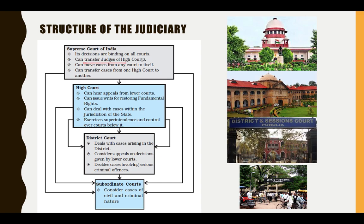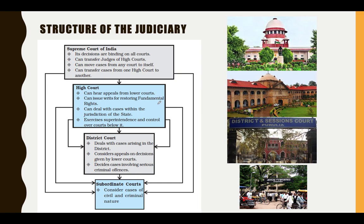The Supreme Court can transfer judges of the High Court. It can move cases from any court to itself. If any court is dealing with a case and feels it is not within its jurisdiction, the Supreme Court can transfer it to a High Court, or transfer cases from one High Court to another. So the Supreme Court can move cases in both directions — from High Courts to itself, or between High Courts.